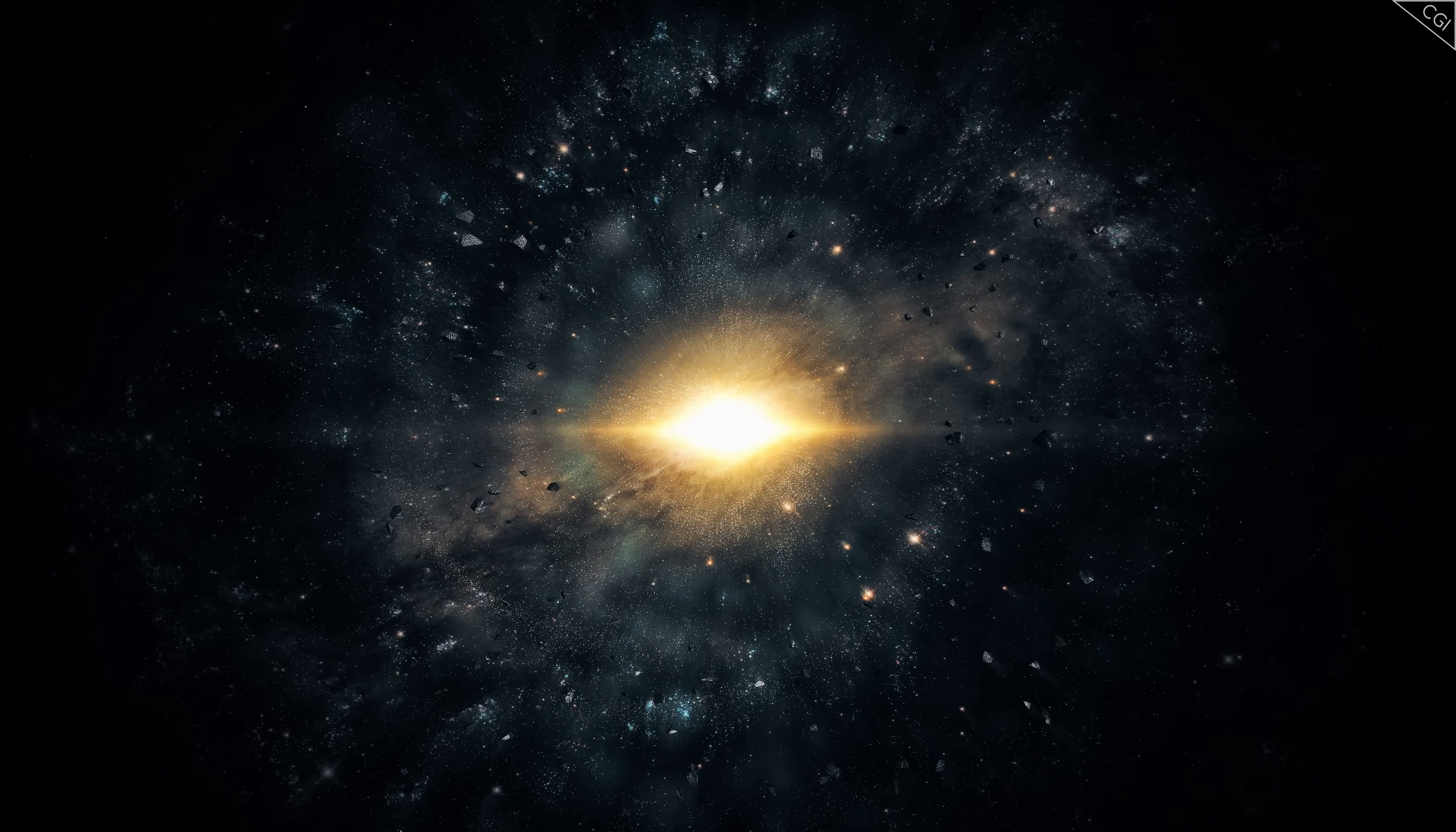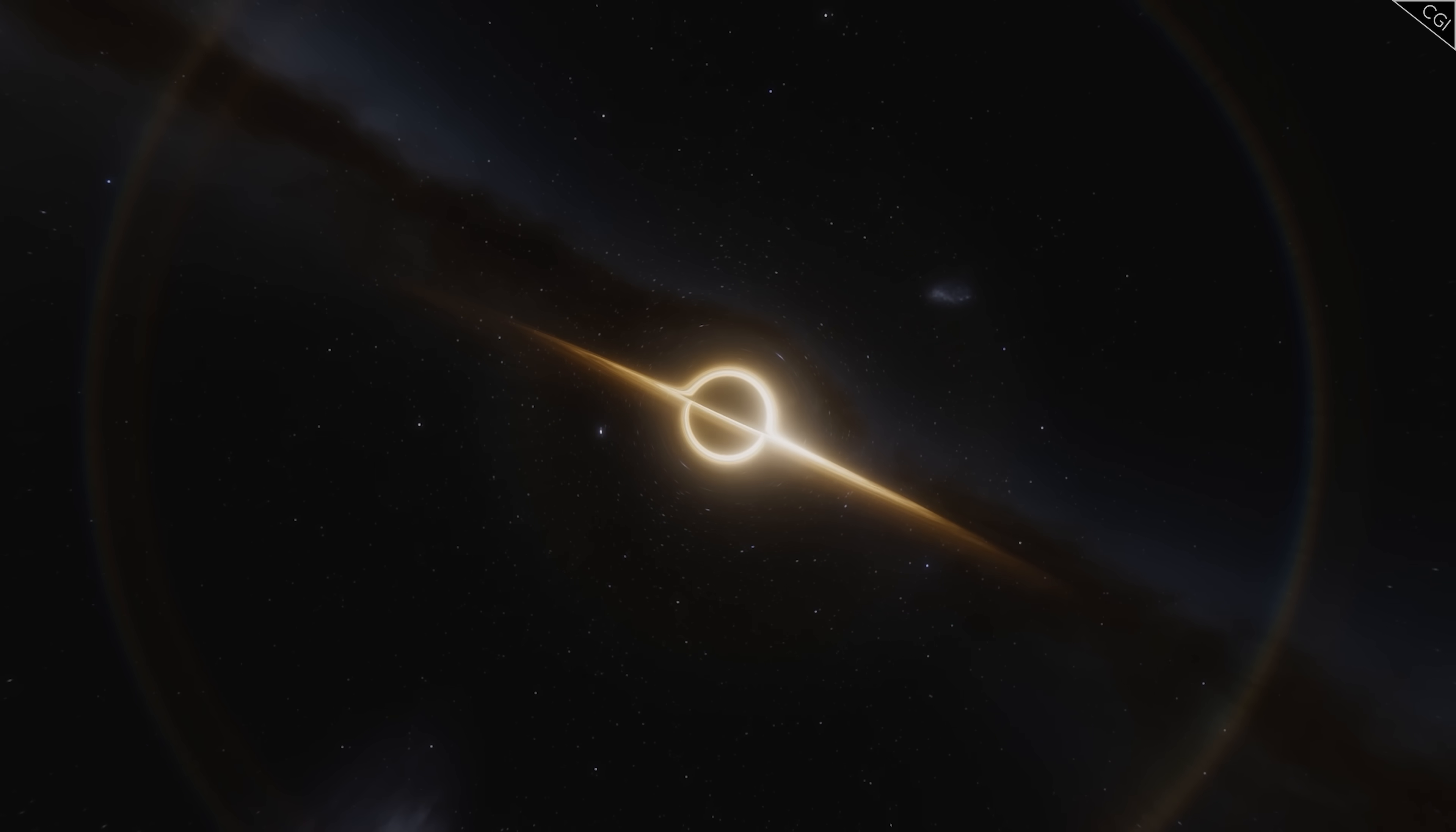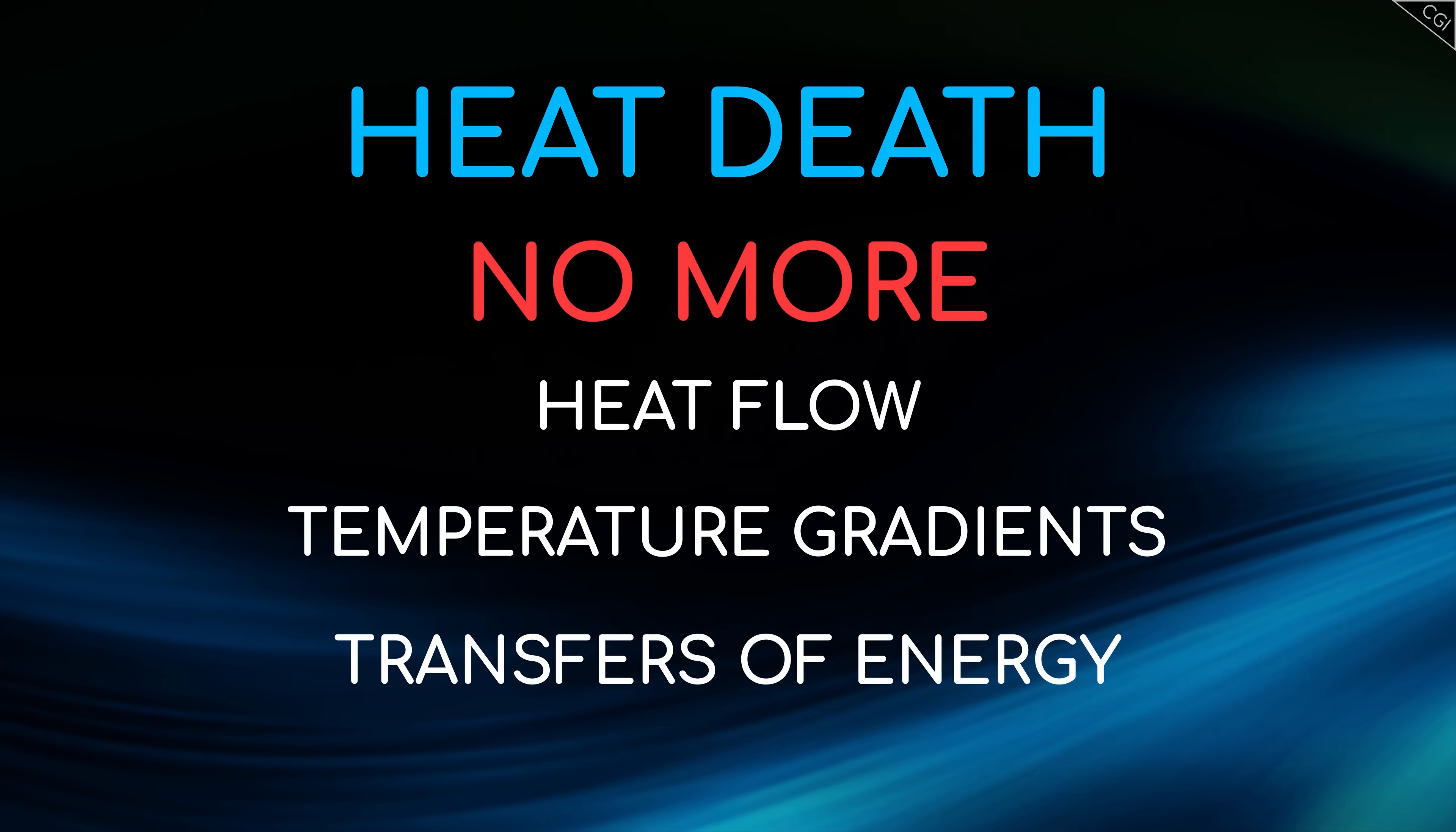Matter will have nothing to do but collapse into black holes, and black holes will evaporate into a pool of radiation. What we once called the Milky Way will be in a state of total thermal equilibrium. Nothing will be happening. There will be nothing to happen. This fate that awaits the Milky Way is sometimes called heat death. Not because it's hot—in fact it will be quite cold—but because there will be no more heat flow, no more temperature gradients, no more transfers of energy from one place to another.